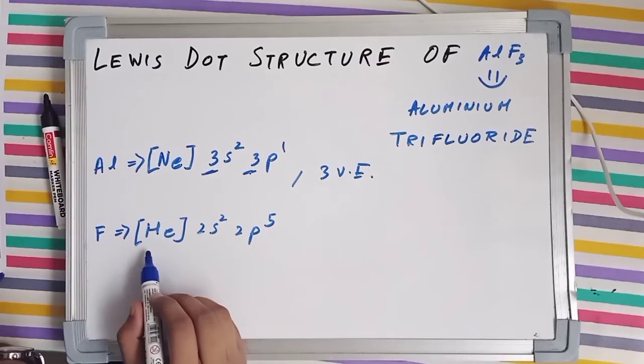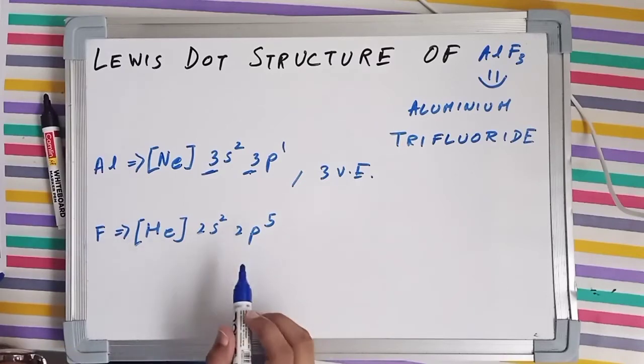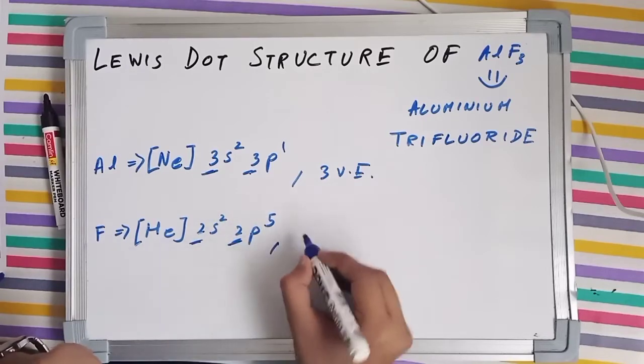Fluorine's electronic configuration is the inert configuration of helium and then 2s2, 2p5. The valence shell is the second shell having 2 plus 5, 7 valence electrons.